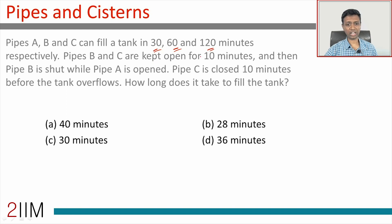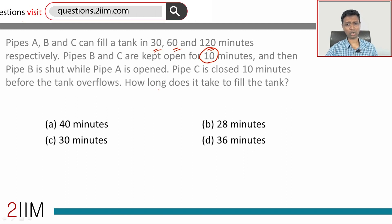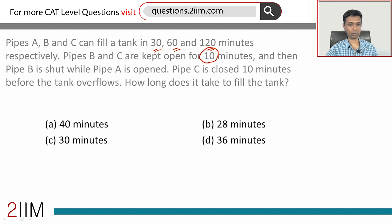B and C are kept open for 10 minutes, and then pipe B is shut while pipe A is opened. So now A and C will be kept open. Pipe C is closed 10 minutes before the tank overflows. How long does it take to fill the tank? We'll solve this in two methods—one unconventional, slightly different, and then the standard template method.